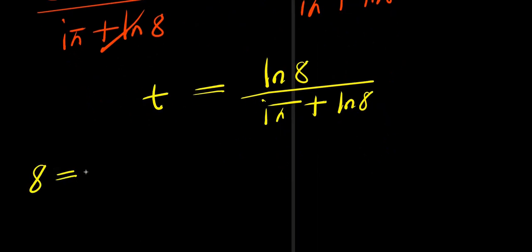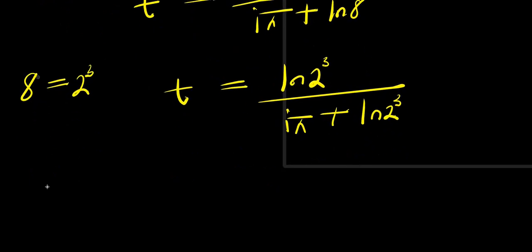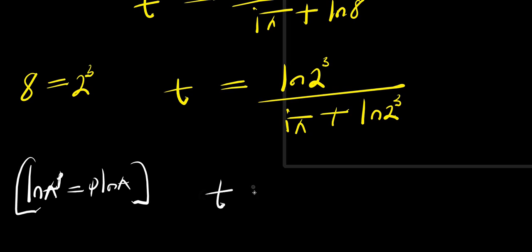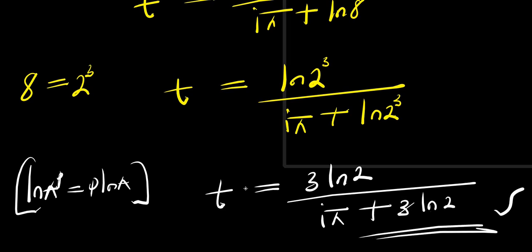Remember 8 equals 2 power 3, that is 2 times 2 times 2, so natural log 8 equals natural log 2 power 3 equals 3 times natural log 2. Therefore t equals 3 natural log 2 divided by i times pi plus 3 natural log 2. So this is our answer.